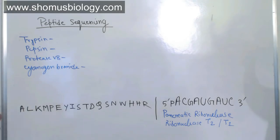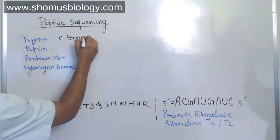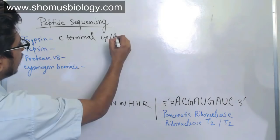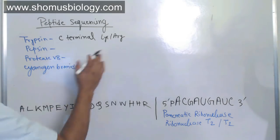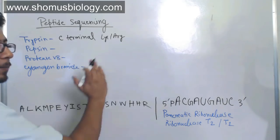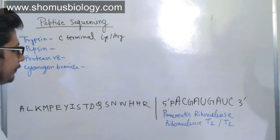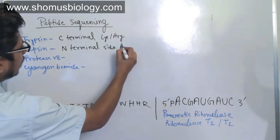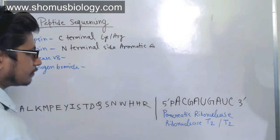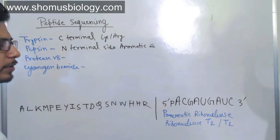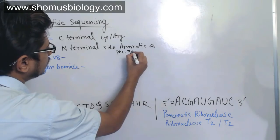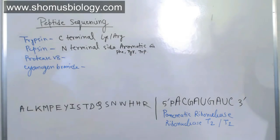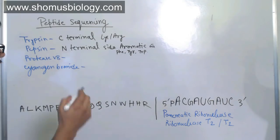The rules are as follows. Trypsin cleaves at the C-terminal side of lysine and arginine — but with one exception: if lysine is followed by proline, or arginine is followed by proline, trypsin will not cut, because proline's bulkier ring prevents it. Pepsin cuts at the N-terminal side of aromatic amino acids. The aromatic amino acids are phenylalanine, tyrosine, and tryptophan.